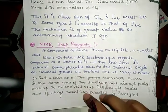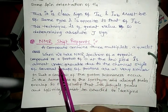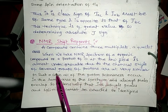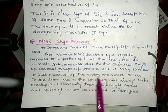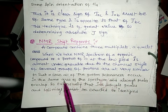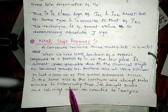When we take NMR spectrum of an organic compound or a portion of it at the low field, it is almost undecipherable due to the chemical shifts of several groups of protons are all very similar. In such a case, all of the proton resonances occur in the same area of the spectrum.